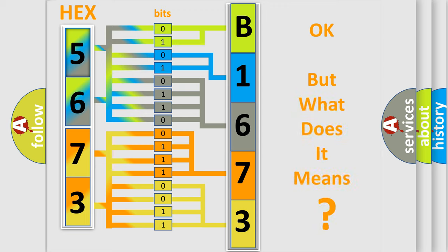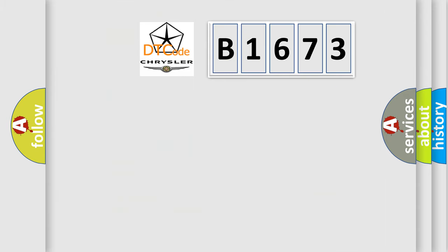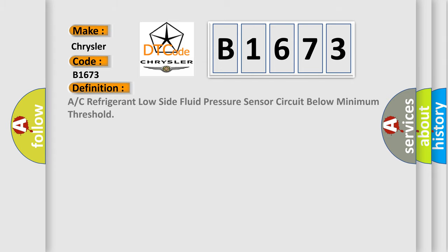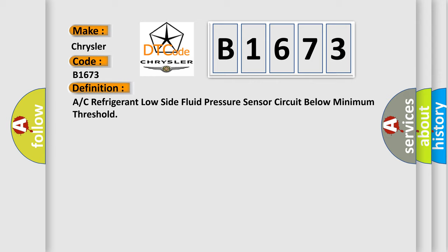The number itself does not make sense to us if we cannot assign information about what it actually expresses. So, what does the diagnostic trouble code B1673 interpret specifically for Chrysler car manufacturers? The basic definition is: A/C refrigerant low side fluid pressure sensor circuit below minimum threshold.